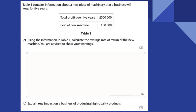Table 1 contains information about a new piece of machinery that a business will keep for five years. Calculate the average rate of return of the new machine. We have 500,000 over five years — that gives you £100,000 per year average annual profit. Then divide that 100,000 by the cost of investment of 50,000, and you can see that gives a return of around 200%. That's looking pretty good.